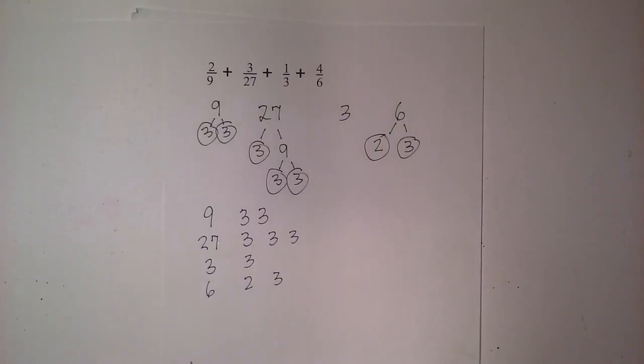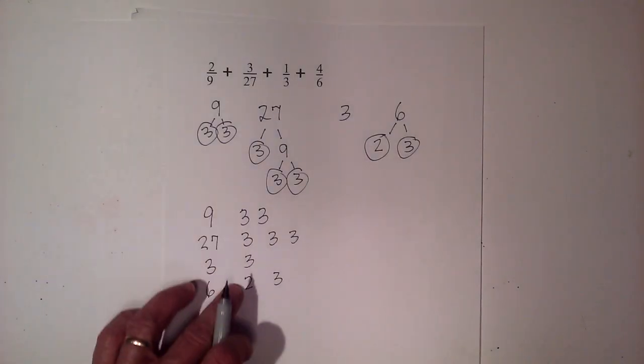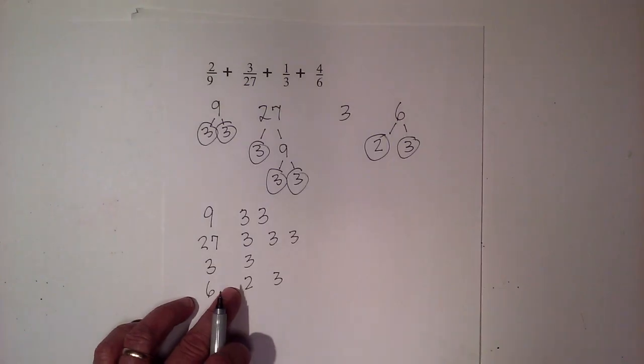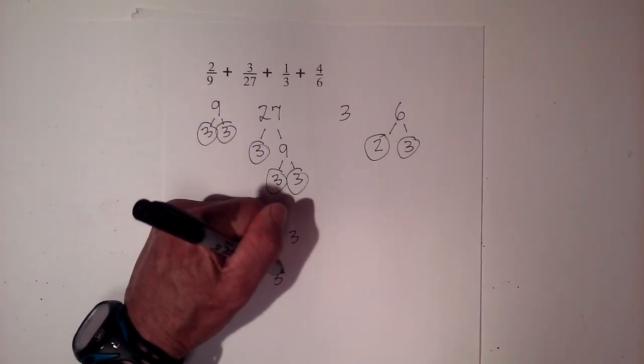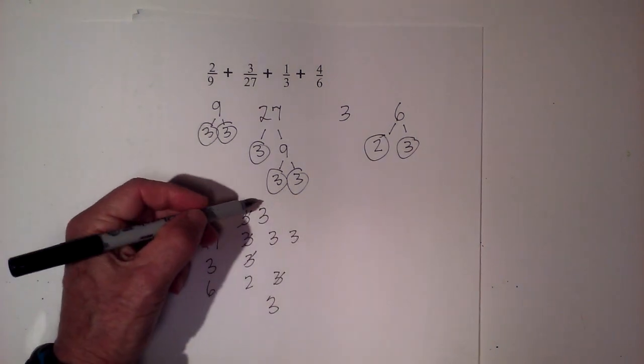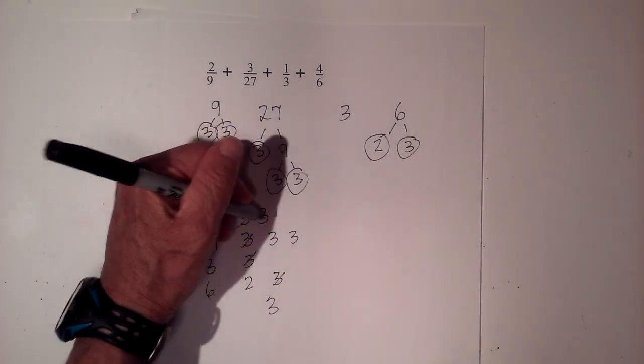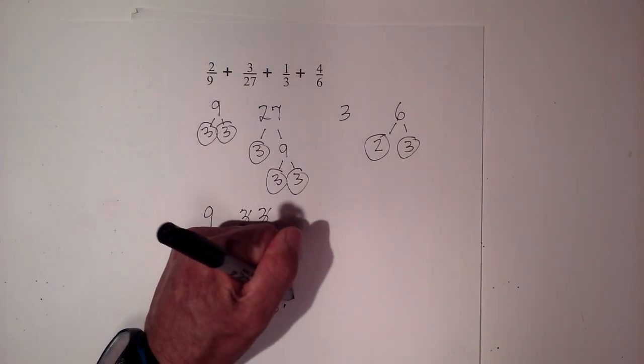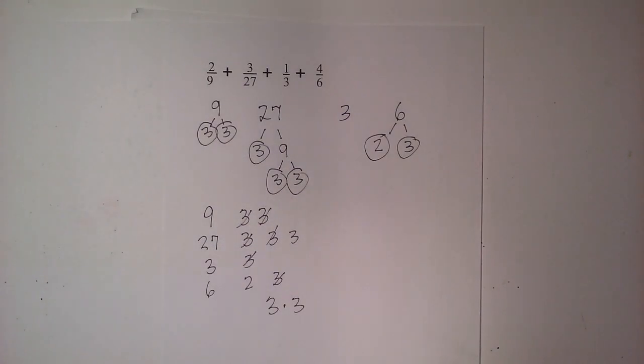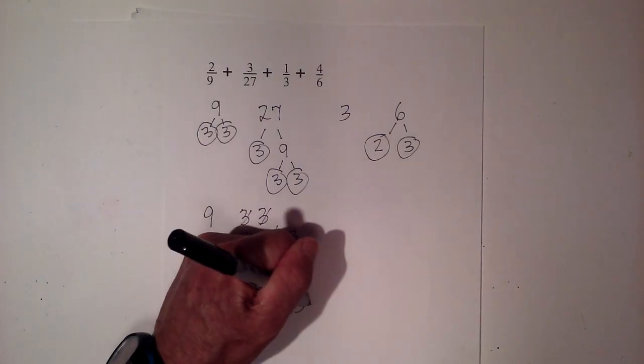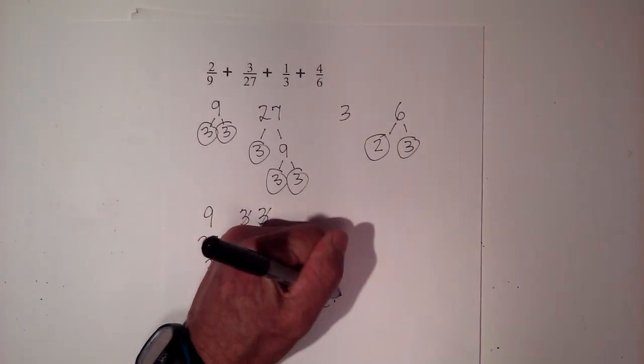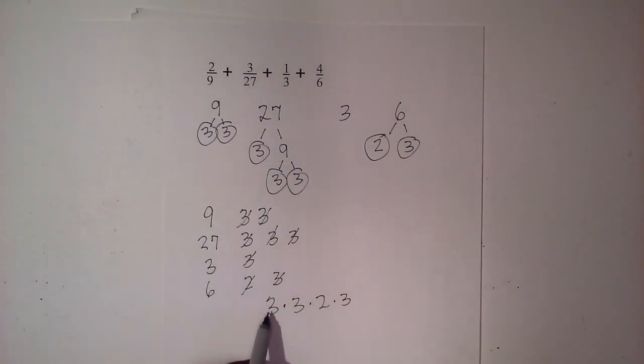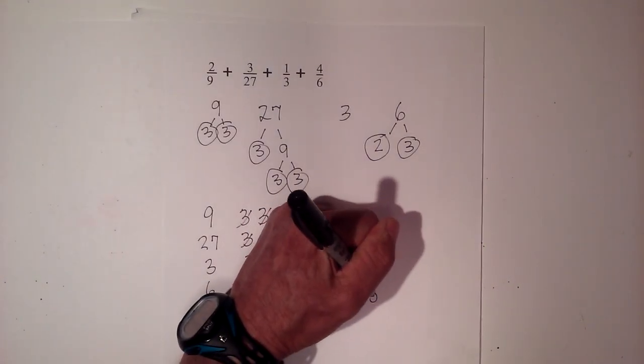So now I follow my rules again. Now I'm going to write down all of my prime numbers. 27 is 3 times 3 times 3 and then obviously 3 and I'm going to go ahead and write the 3 here and then 6 is 2 times 3. So now I follow my rules again. If the number is found in more than one number then only use it once and basically I'm multiplying all the prime numbers together. So this 3 is found in 3 of the numbers. And then we have this 3 is in 2 of the numbers. So there is another 3. And then we have a 2. And then one more remaining 3.